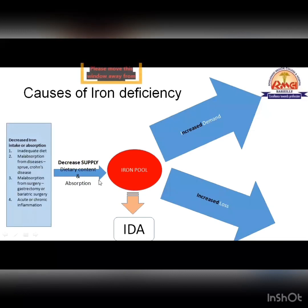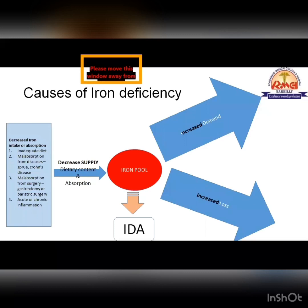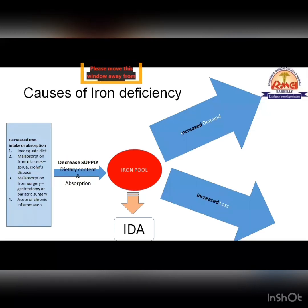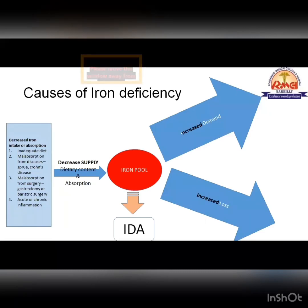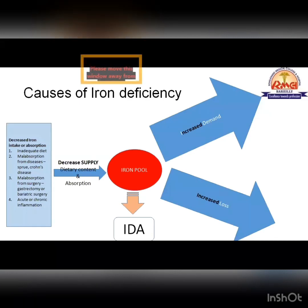The causes of decreased supply may be decreased dietary content — if a patient is taking an inadequate diet — or it may be malabsorbed from the gut. Malabsorption may be due to a disease process or surgical causes like tropical sprue or Crohn's disease. Importantly, iron is absorbed from the proximal intestine — mainly the duodenum. Any pathology affecting the proximal intestine will lead to iron deficiency.